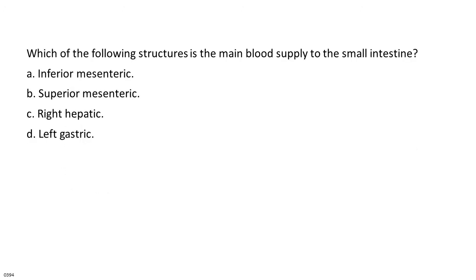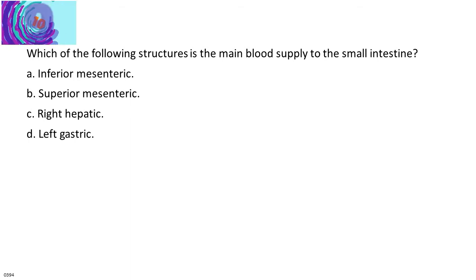Which of the following structures is the main blood supply to the small intestine? a. Inferior mesenteric. b. Superior mesenteric. c. Right hepatic. d. Left gastric.